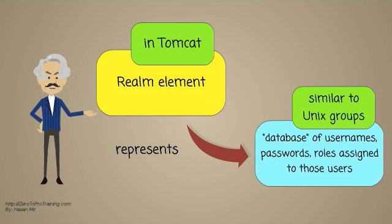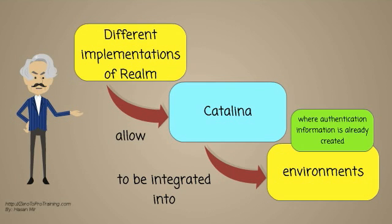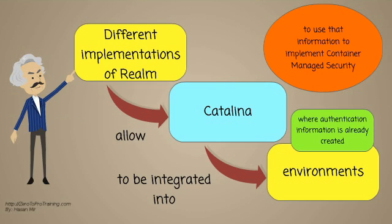In Tomcat, a realm element represents a database of usernames, passwords, and roles, similar to Unix groups, assigned to those users. Different implementations of realm allow Catalina to be integrated into environments where such authentication information is already being created and maintained, and then use that information to implement container managed security, as described in the servlet specification.